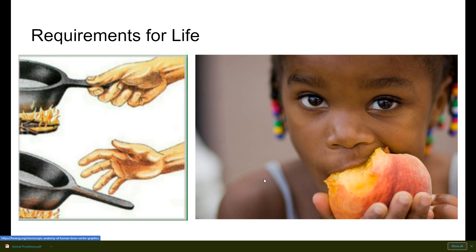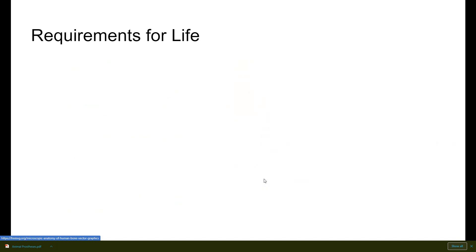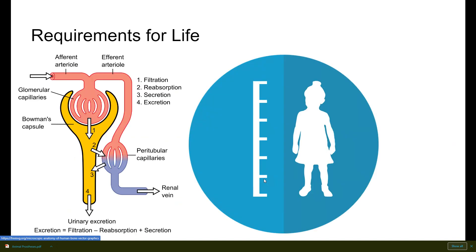Next is metabolism — a really big word. It has to do with all the chemical reactions going on in our bodies. We typically think of eating, but metabolism not only involves breaking down food but also building up structures in our bodies. There's also excretion, which is linked to metabolism because metabolic processes produce waste products that are not good for the body, so the body needs to get rid of them — including ammonia.